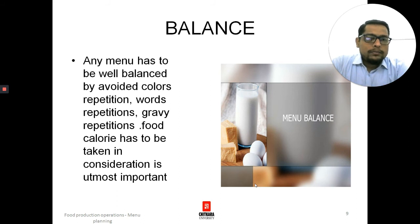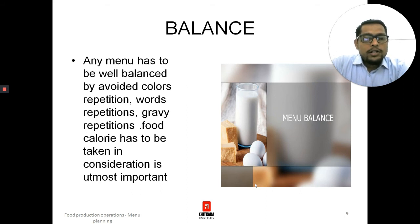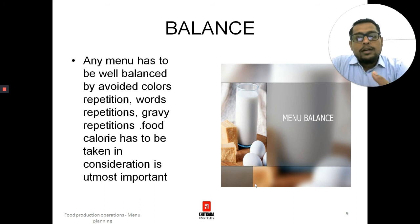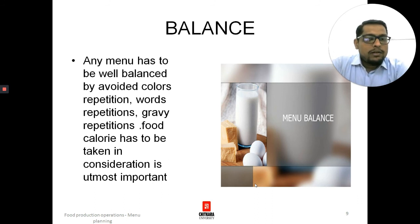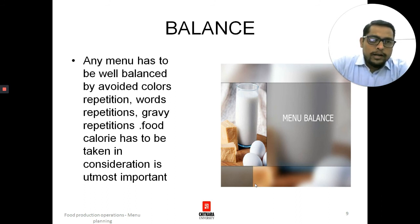Next is balance. This is again an important part — any menu has to be well balanced by avoiding repetition of colors, words, and gravy. Food calorie balance is also most important. The color should not be repeated in the menu; it should have different, attractive colors. Words shouldn't be repeated — for example, chicken tikka masala, vegetable masala, butter masala — the word 'masala' keeps repeating, giving guests the impression that only a single gravy is used.